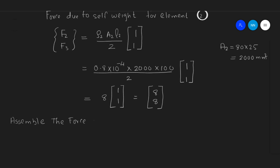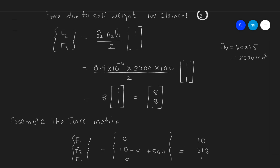We have the force due to self-weight at every node, so first we need to assemble the forces. Force at node 1 (F1) is 10N due to self-weight. At node 2, the combined self-weight contribution is 10N from element 1 and 8N from element 2. At node 3, the force due to self-weight is 8N. It is also given that an external force of 500N is applied at node 2.